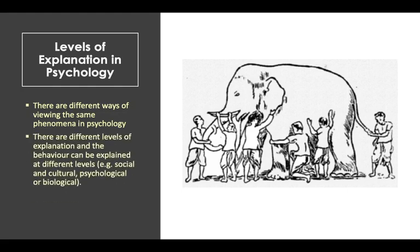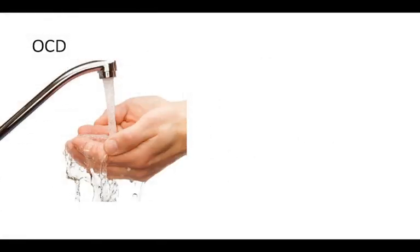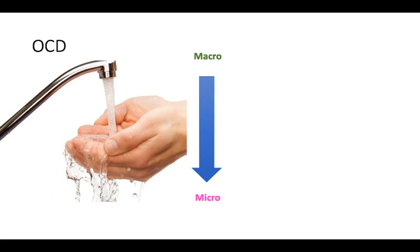Because there are different examples, there are different levels of explanation, and behavior can be explained at different levels — social and cultural, psychological, or biological. This is why it's a debate. Another example we can look at is OCD. Different explanations understand it across different spectrums — from micro, looking at the smaller parts, to macro, taking the grandest scheme of things.